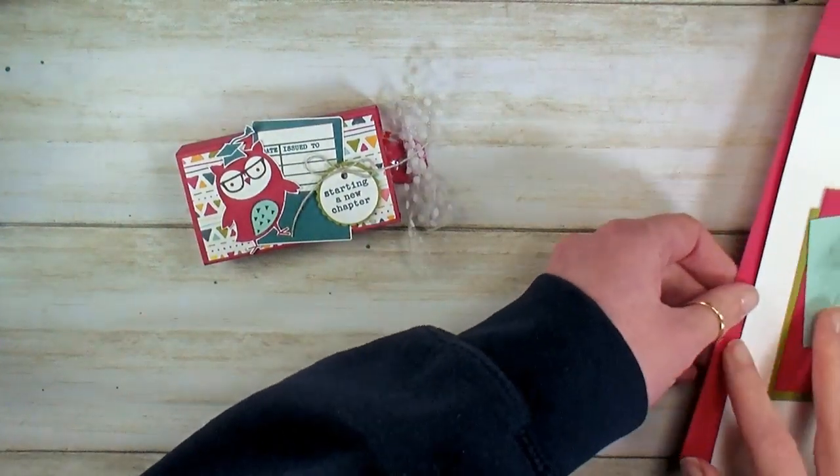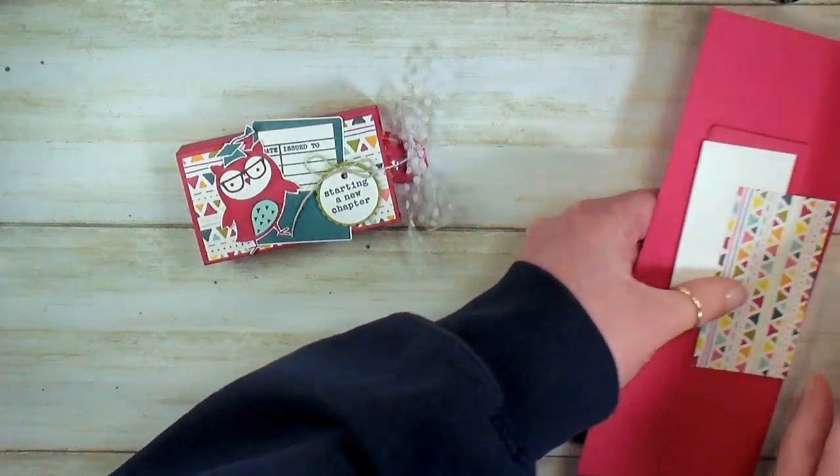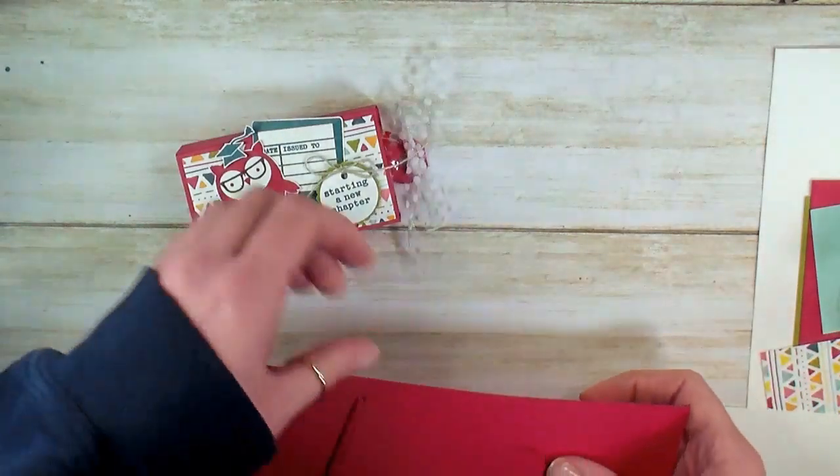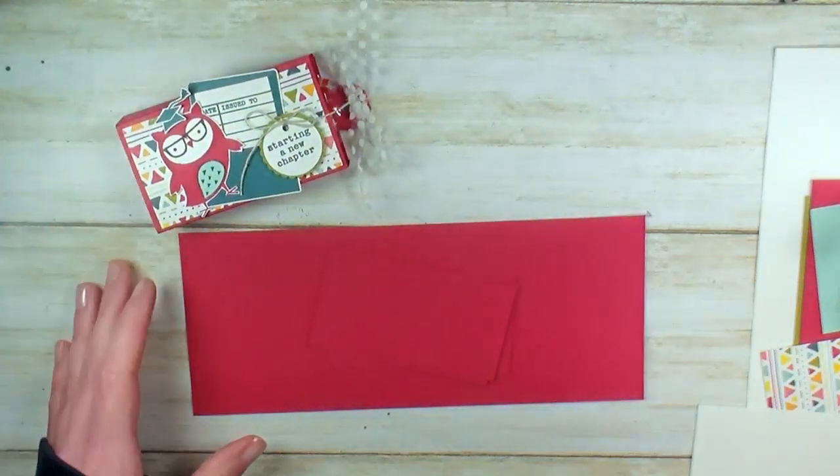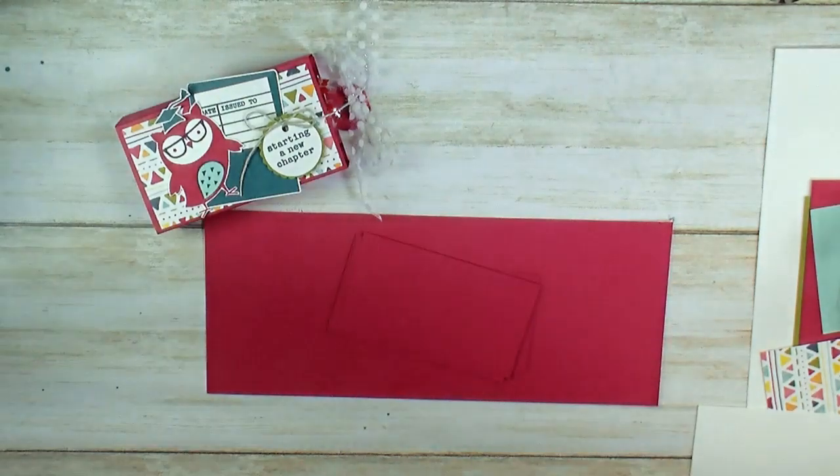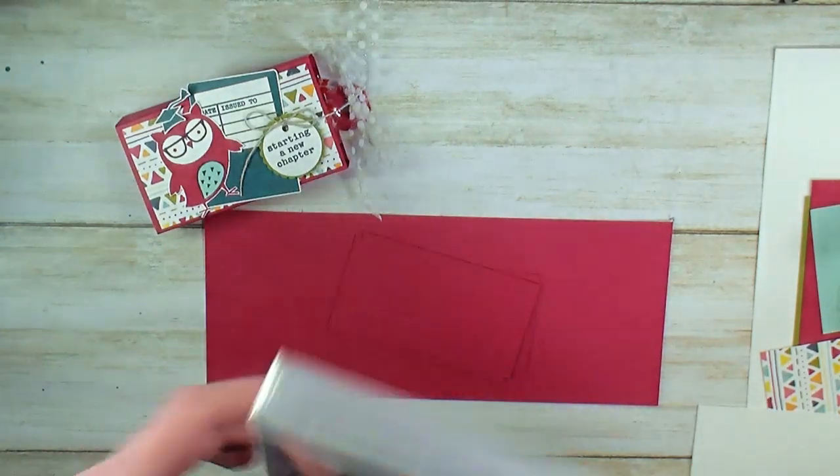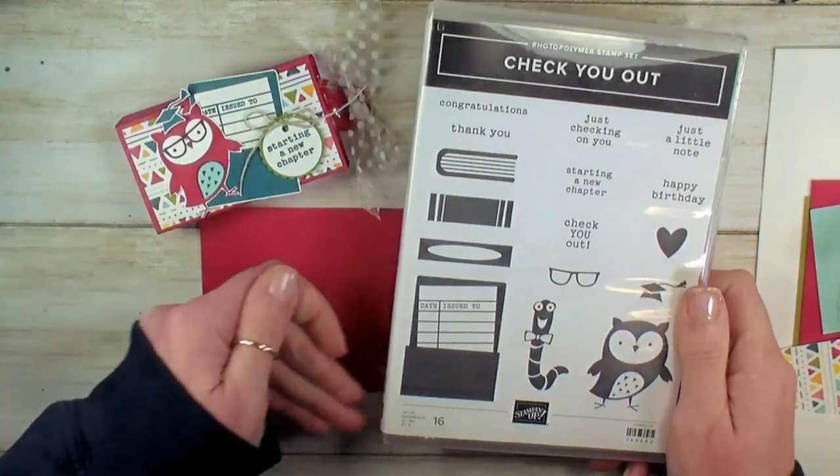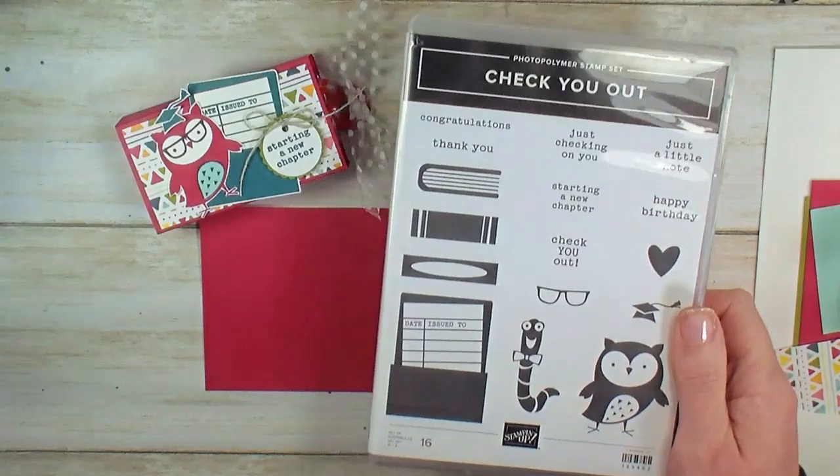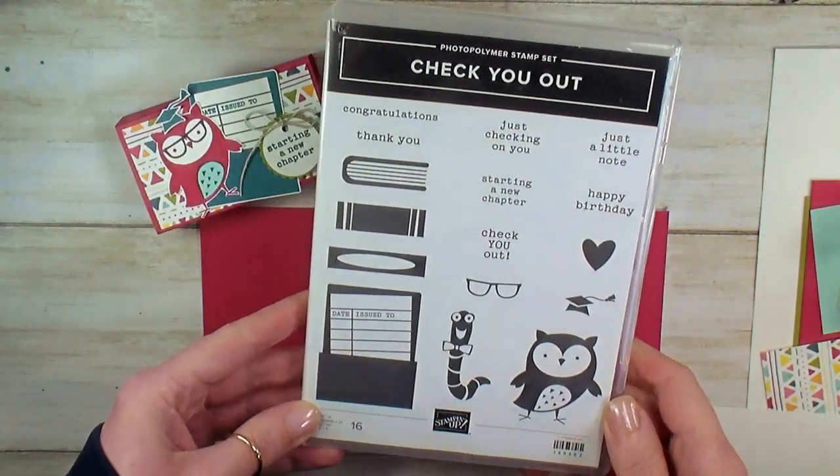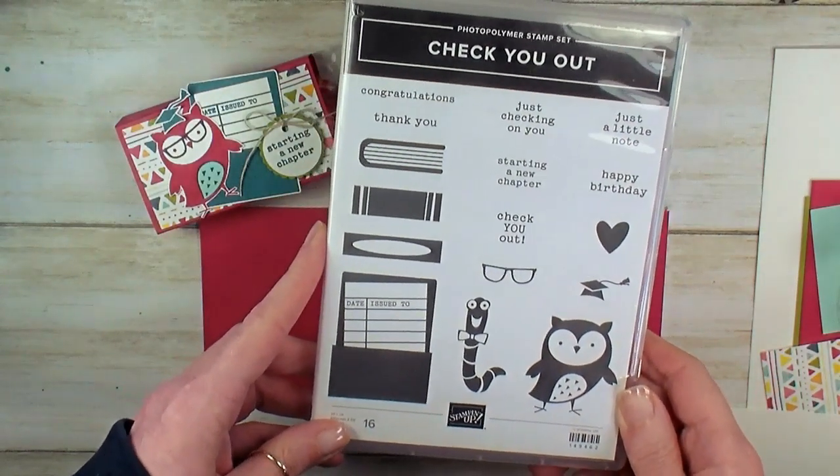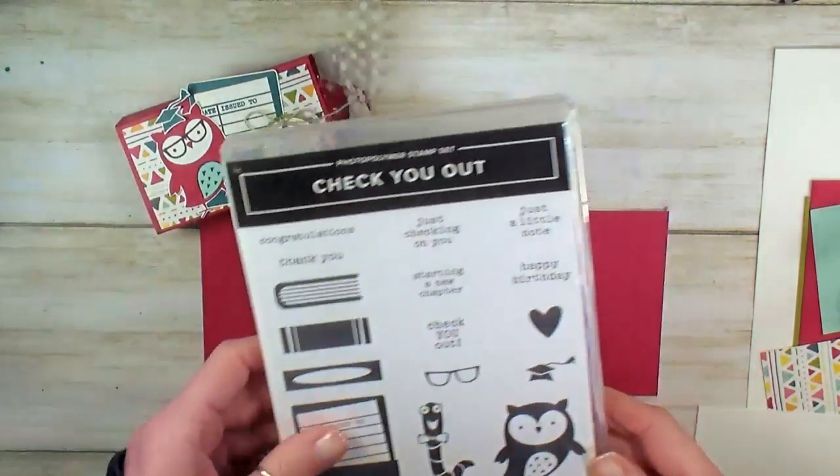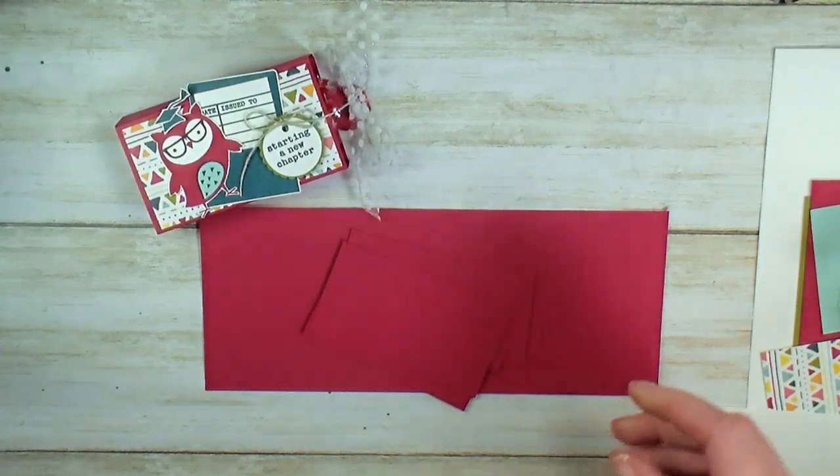I thought this was a great way to showcase some retiring products and have a happy send off. Today, we are honoring Check You Out. This is an awesome photopolymer stamp set. It's 16 pieces, and it's only $16, and it's available while supplies last from the 2019-2020 annual catalog. We're going to have a lot of fun with the Check You Out Owl.